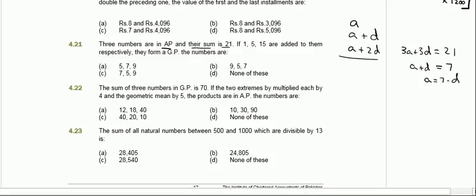It further says that if 1, 5, and 15 are added to them respectively: the first term a becomes a plus 1, the second term a plus d becomes a plus d plus 5, and the third term a plus 2d becomes a plus 2d plus 15.